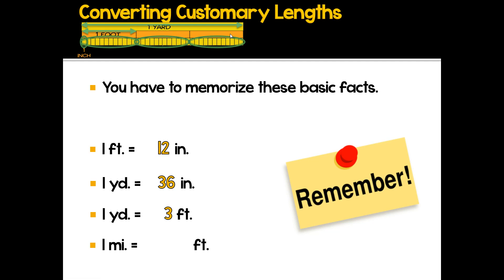The last fact: we couldn't fit a mile on the screen — it would simply be too large. Maybe you've run that in gym class before — really long distance. This is one you just have to memorize: a mile is 5,280 feet. A silly way to remember that is 'five tomatoes' — 5,280. That little memory device might help you remember.